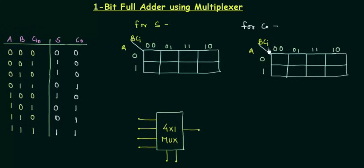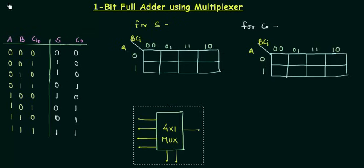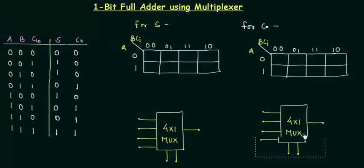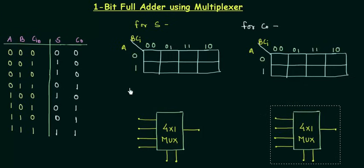I'll copy and paste to create a separate 8-cell K-map for the Carry Output. Similarly, I will require another 4×1 MUX — this one is for the Sum, and we need one more 4×1 MUX for the Carry Output. So we now have everything required to do the implementation.